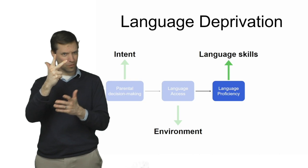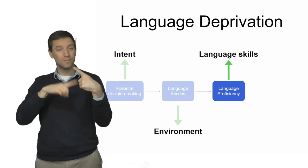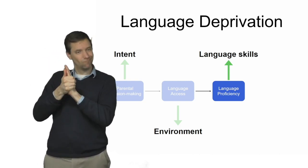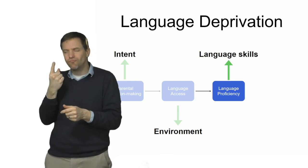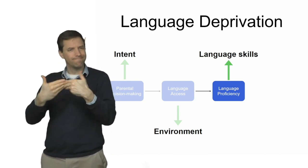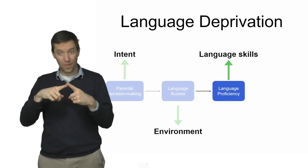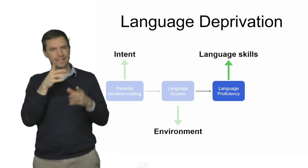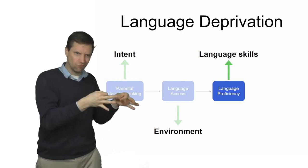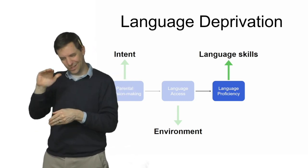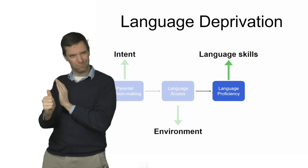A third thing people might mean when they talk about language deprivation is the child's own proficiency in language — their fluency, their comprehension, the ease with which they use the language. When we're talking about that, we're not talking about what's in the environment, and we are clearly not talking about what the parents were intending. We're really focusing on the child's own language skills.